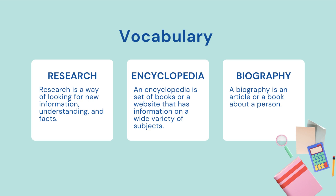An encyclopedia is a set of books or a website that has information on a wide variety of subjects. When Mrs. Brooks was a kid, we only had encyclopedias that were books that we could look up information in. Today, we are going to be going to a website or database that is online that has that same information that was in the books. And then finally, a biography. A biography is an article or a book about a person.